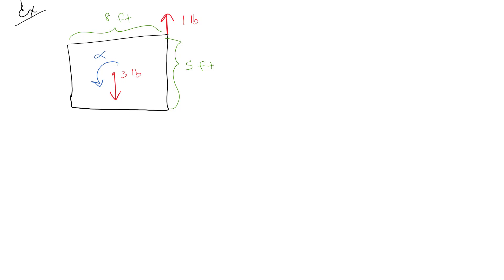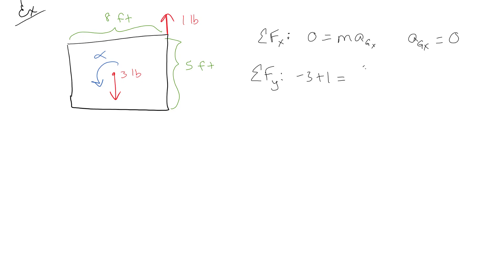We still need to do the sum of forces in X and Y. There are no forces in X, so the acceleration of the center of gravity in the X direction is zero. For the sum of forces in Y: 3 pounds down minus 1 pound up equals mass times a_Gy, giving an acceleration of the center of gravity in Y of negative 21.5 feet per second squared.